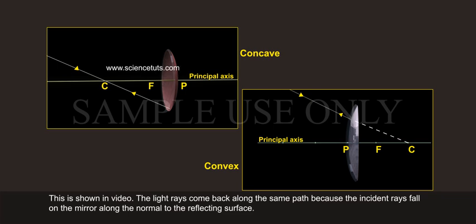The light rays come back along the same path because the incident rays fall on the mirror along the normal to the reflecting surface.